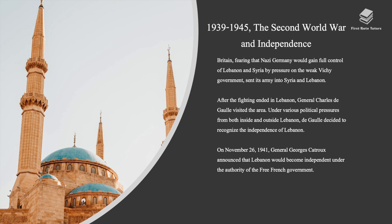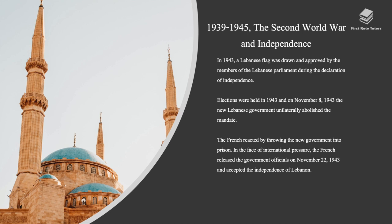After the fighting ended in Lebanon, General Charles de Gaulle visited the area. Under various political pressures from both inside and outside Lebanon, de Gaulle decided to recognize the independence of Lebanon. On November 26, 1941, General Georges Catroux announced that Lebanon would become independent under the authority of the Free French government. In 1943, a Lebanese flag was drawn and approved by members of the Lebanese parliament during the Declaration of Independence. Elections were held in 1943, and the new Lebanese government unilaterally abolished the mandate. The French reacted by throwing the new government into prison, but in the face of international pressure, released government officials on November 22, 1943, and accepted the independence of Lebanon.